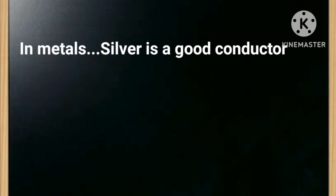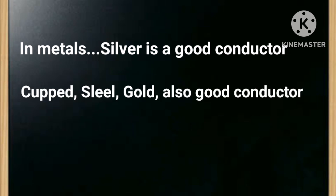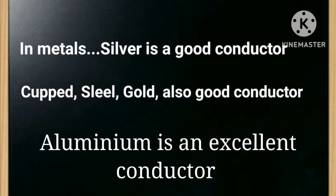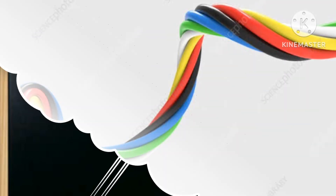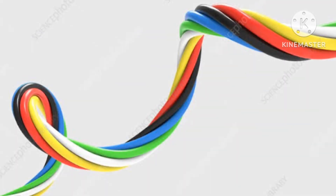In metals, silver is the best conductor of electricity, but it is costly so we don't use silver in industries and transmission of electricity. Copper, brass, steel, gold, and aluminium are good conductors of electricity used for industrial purposes. Mercury is an excellent liquid conductor.